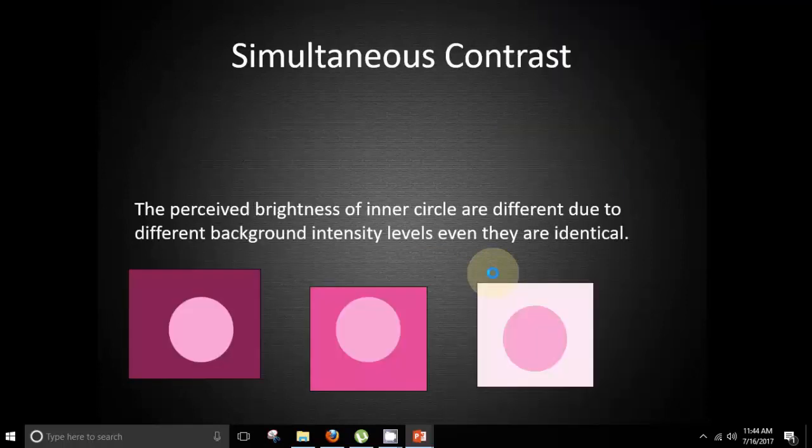Now talking about simultaneous contrast, as you can see here we have the same image with three different backgrounds. The first image is a darker background, the second one is comparatively lighter and the third one is much lighter. Basically here the perceived brightness of inner circle are different due to different background intensity levels even if the circle is identical in all three pictures.